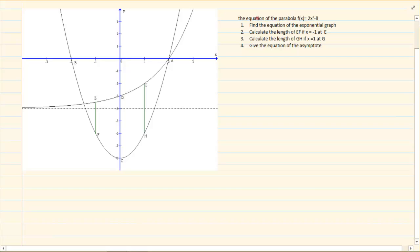When they give you that the equation of the parabola is 2x squared minus 8, which means immediately we know that our turning point is at minus 8. If you do x intercept, you know that we are on 2 and on minus 2.